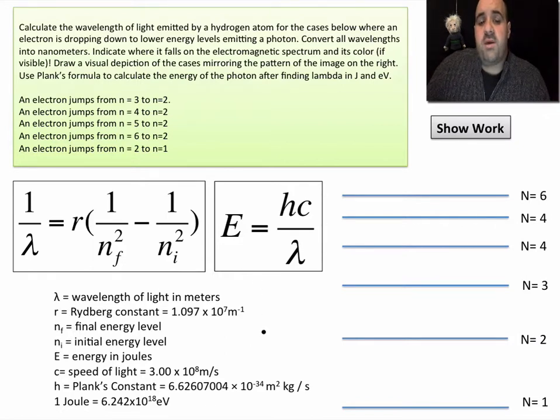This was Bohr's big claim to fame. He did this for the hydrogen atom. For the Bohr model of the atom, it was a good step forward in our atomic history, but it only really works for the hydrogen atom. Once we get systems with more than one electron, the math becomes way too complex. This doesn't work anymore.